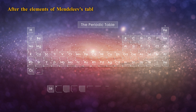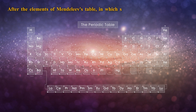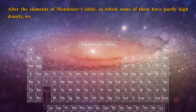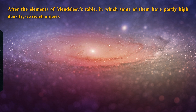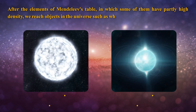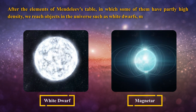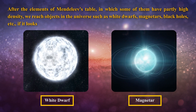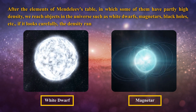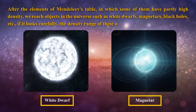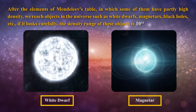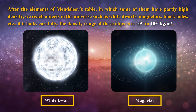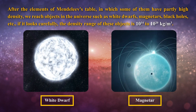After the elements of Mendeleev's table, in which some of them have partly high density, rich objects in the universe such as white dwarfs, magnetars, black holes, etc. — if looked at carefully, the density range of these objects is 10 to the power of 14 to 10 to the power of 20 kg per cubic meter.